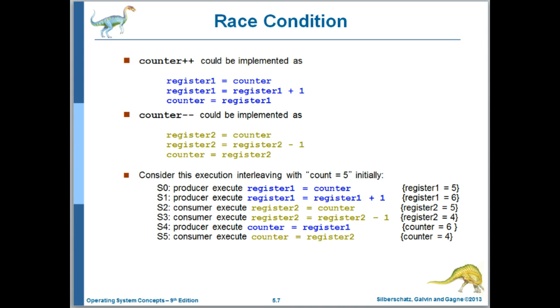So here we see the race condition. So this implementation of counter++, think of it as at the assembly language level. So we perform a load operation to get the counter variable from memory into a register, then perform the addition, and then perform a store operation to get the value of the variable back out into memory. Similarly for counter minus minus.